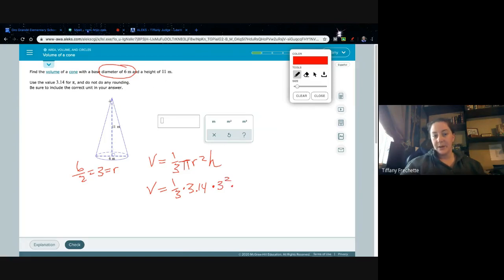So now we have 3 squared times the height of the prism. Which again, they gave us up here. And in the... I'm sorry, not prism. The cone is 11. That's what I get for doing too many of these videos all at once.